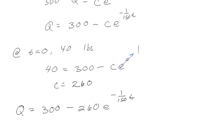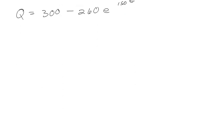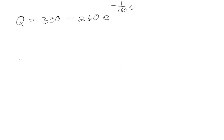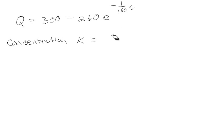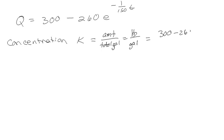Plugging everything in: Q equals 300 minus 260·e^(-t/150). That is my equation that describes the activity. For concentration, we call it K, which is just the amount over the total gallons — pounds per gallon — so K equals (300 - 260·e^(-t/150)) divided by 600.